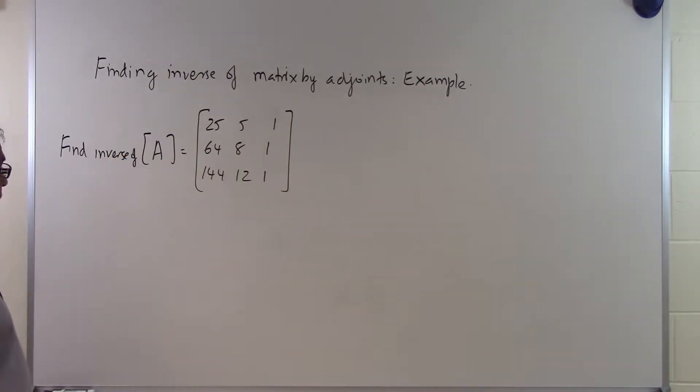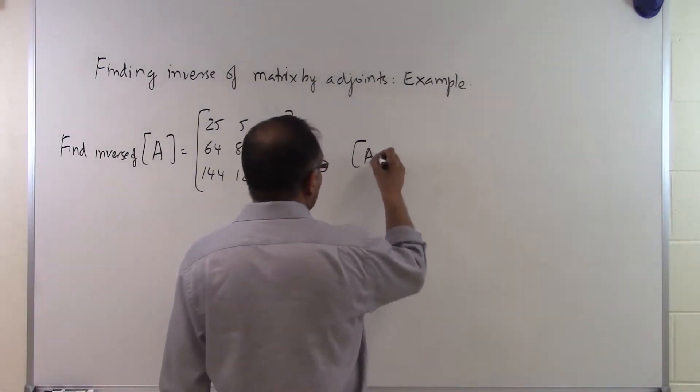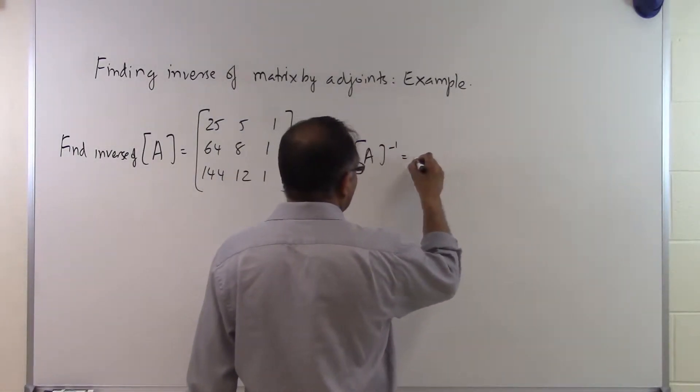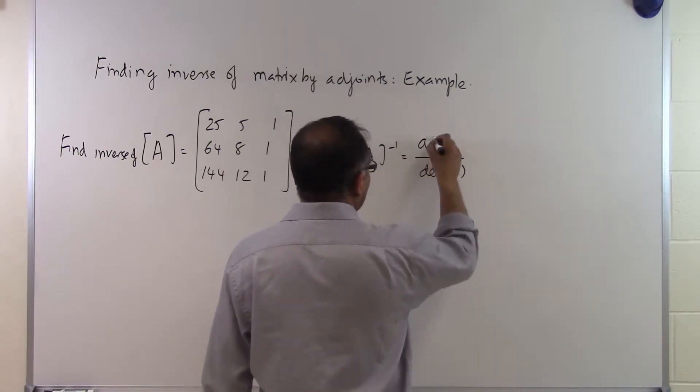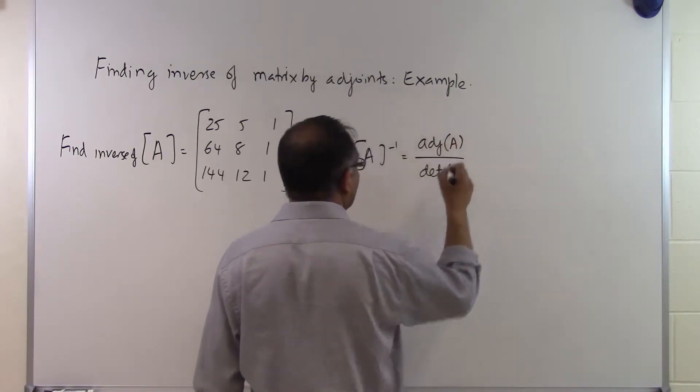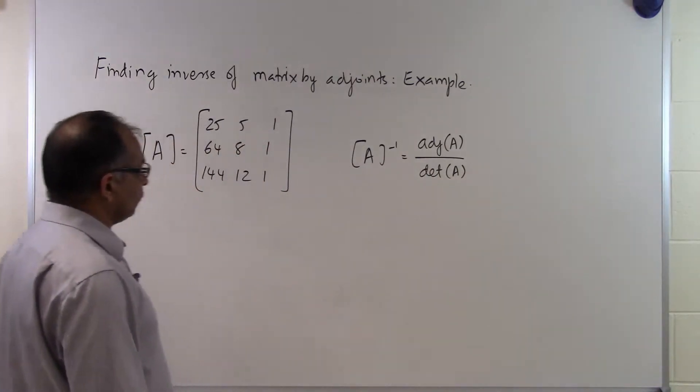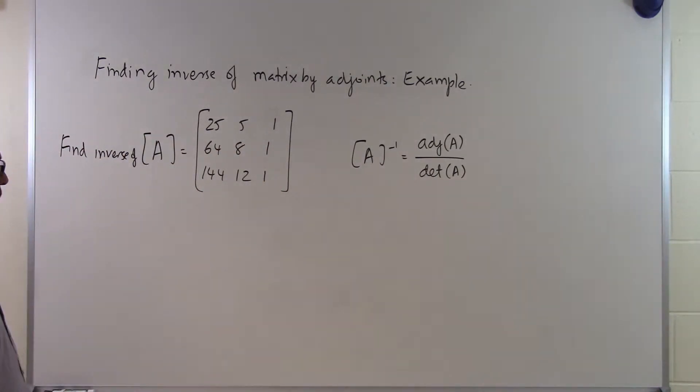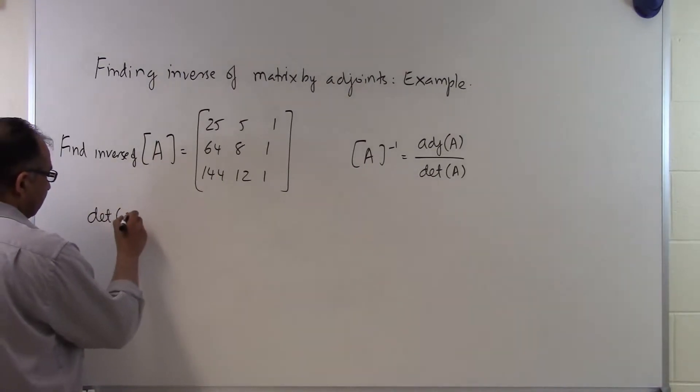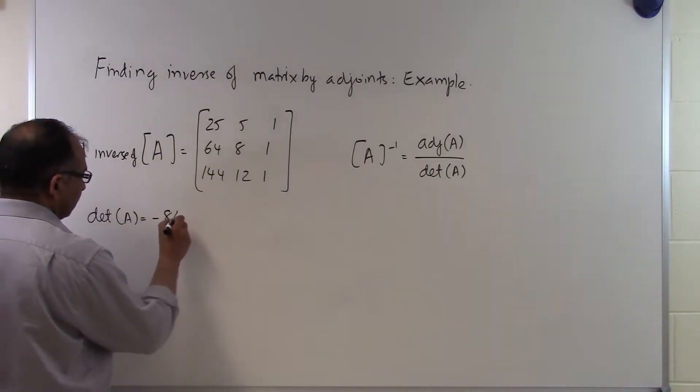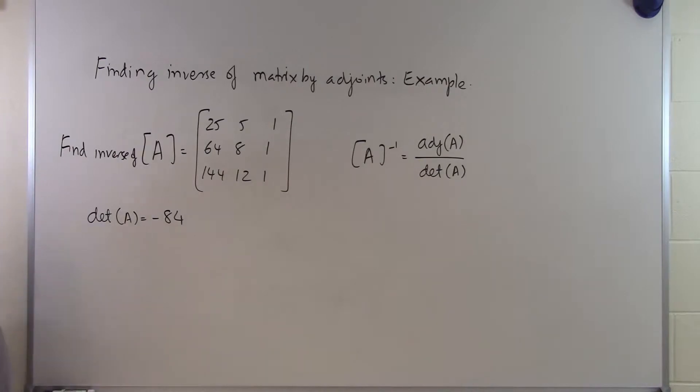We know that in order to find the A inverse, what we have to do is find the determinant of the A matrix, and then we also have to find the adjoint of A. And if we're able to do that, we are able to find the inverse of the matrix. Determinant of A is given to you as minus 84. We have done this in a previous segment.